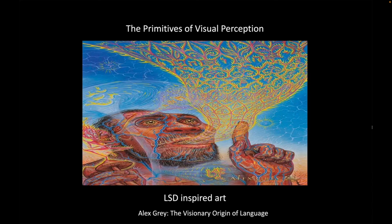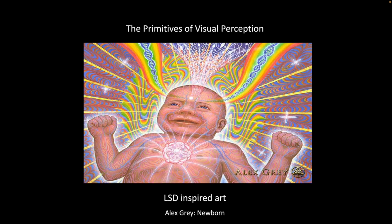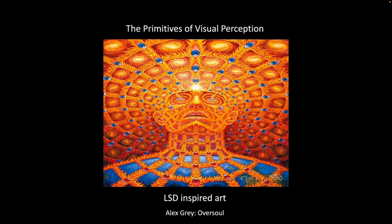When we observe psychedelic art, we see a common theme of the spontaneous emergence of symmetry and periodicity in ornamental type patterns. This one is Alex Gray's 'The Visionary Origin of Language.' Here's another painting by Alex Gray, 'Newborn.' I think it's a great depiction of what the experience of the newborn must be like, with overwhelming rainbows of symmetry and periodicity until he learns to view the world through all that chaotic confusion.